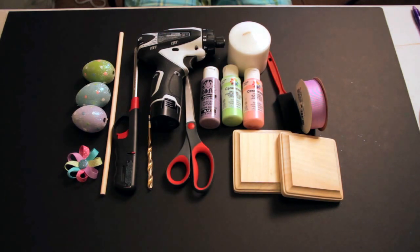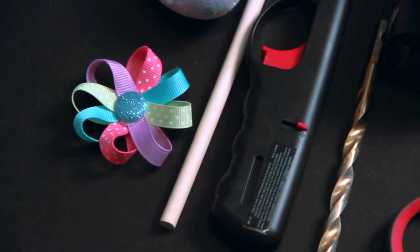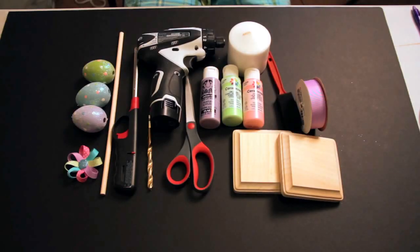You're going to need a drill with a 5-16 inch drill bit and three loop flower bows. For instructions on how to make this flower, click on the link below.